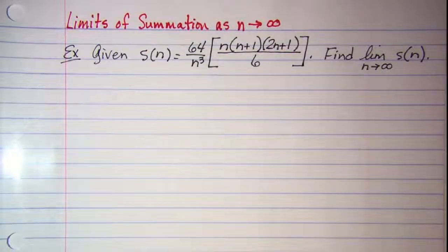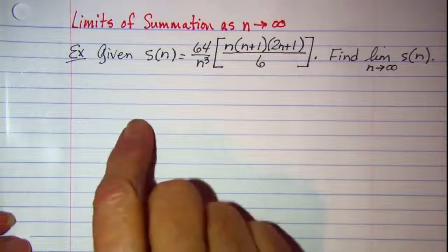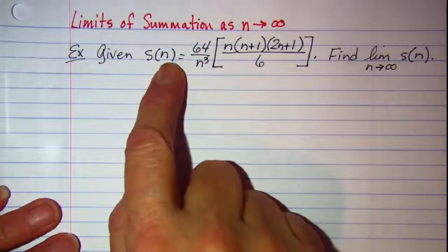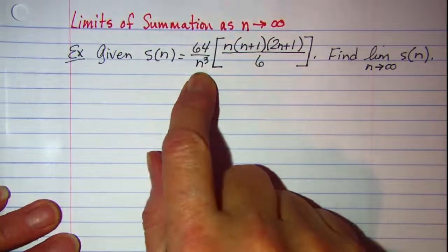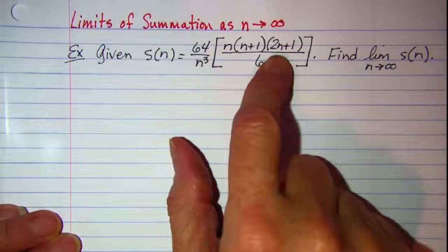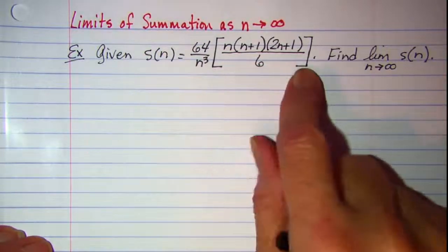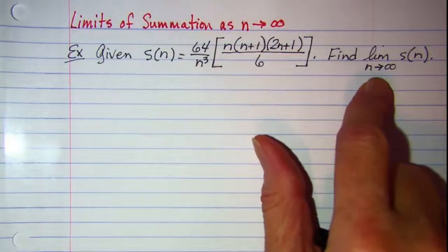In this video we will be looking at limits of summation as n approaches infinity. The problem that we will be looking at is given that s of n equals 64 over n cubed times the quantity n times n plus 1 times 2n plus 1 all over 6, and we want to find the limit of s of n as n approaches infinity.